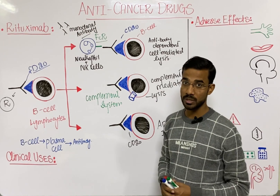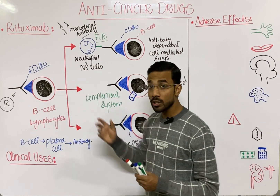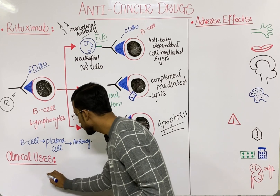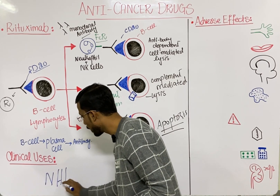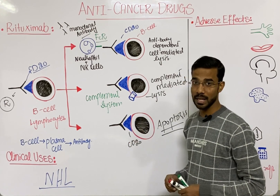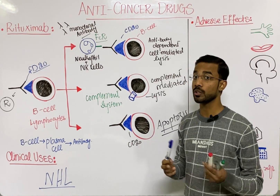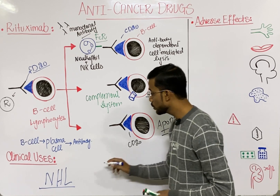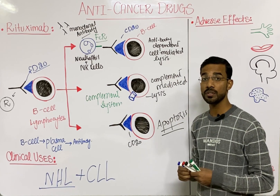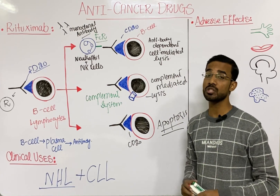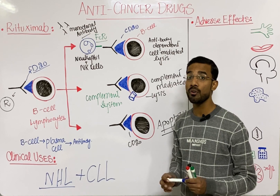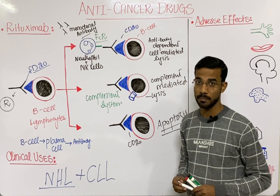If we discuss clinical uses, Rituximab is most importantly used in non-Hodgkin lymphoma, because in this case we just have to destroy the B cells, which is achieved by using Rituximab. It can also be used in chronic lymphocytic leukemia, because you will see proliferation of B cells and we have to stop that proliferation. Chronic lymphocytic leukemia is a blood cancer.